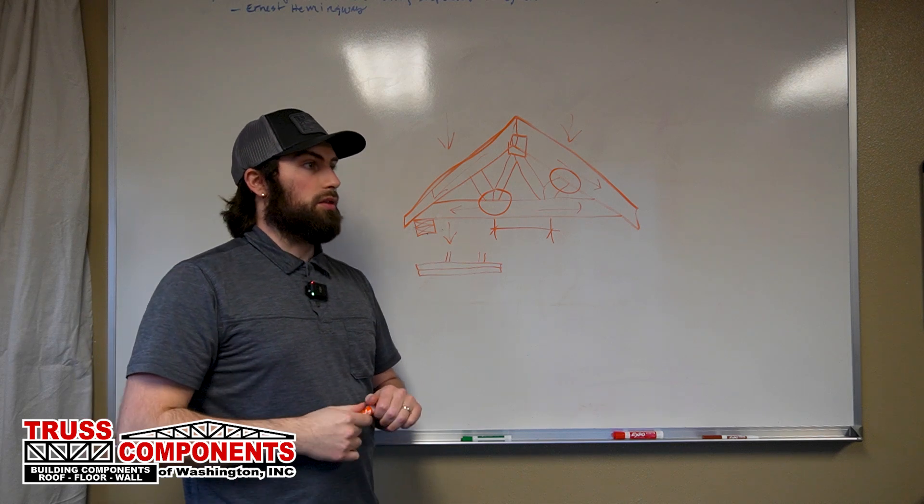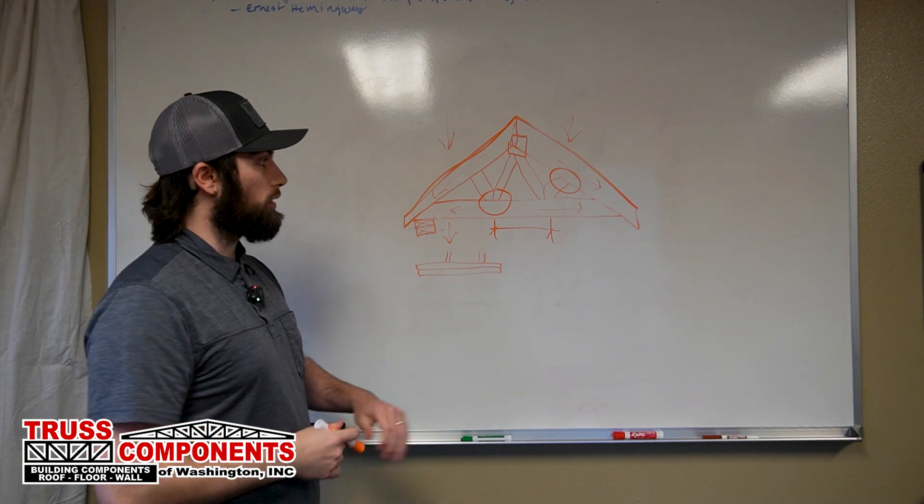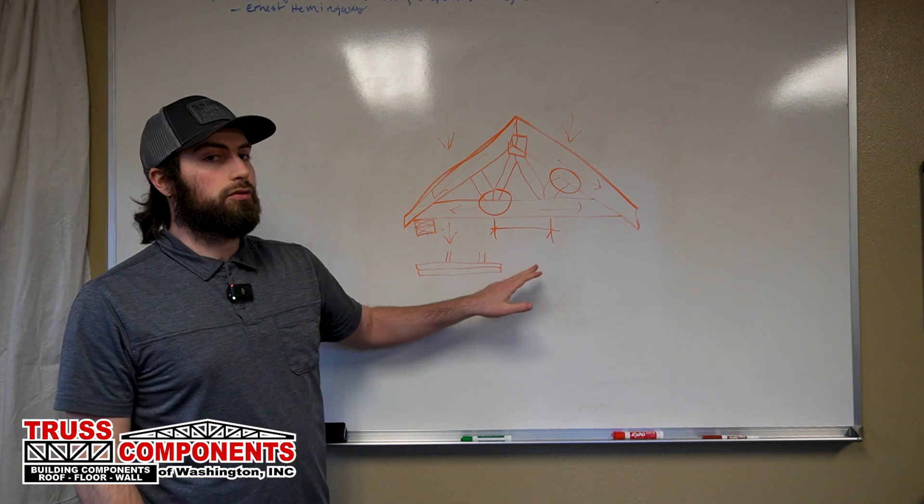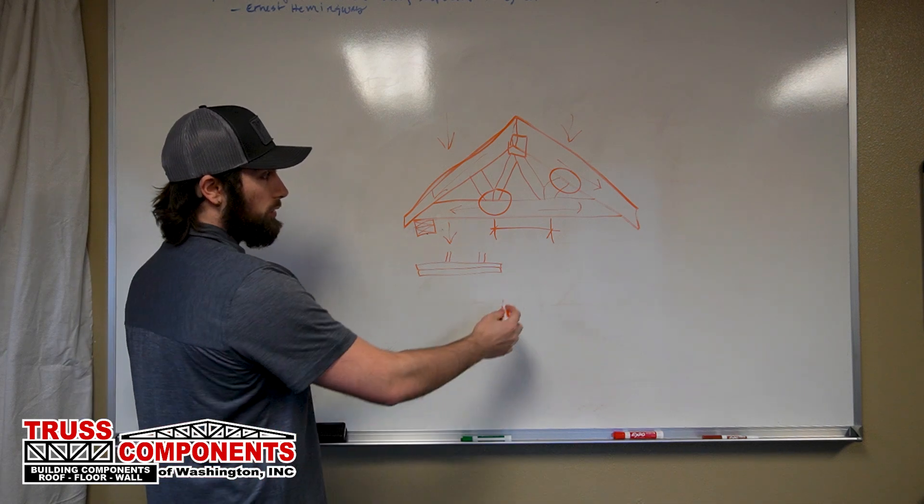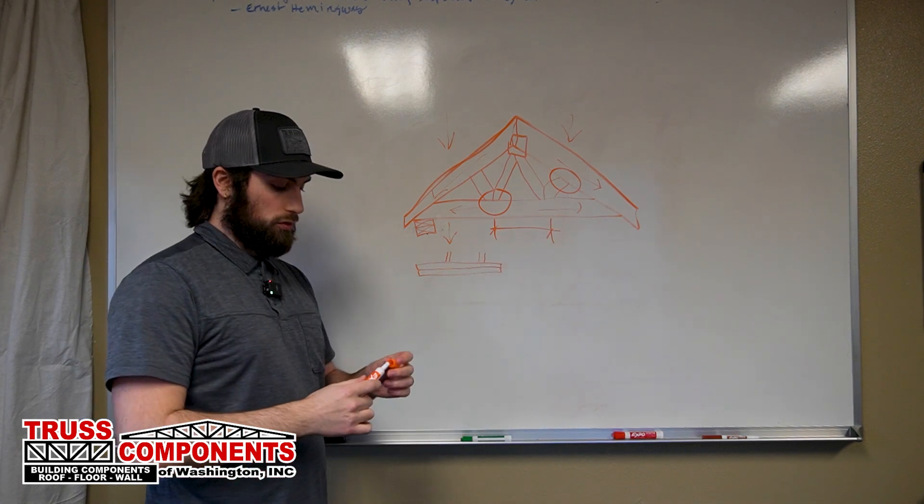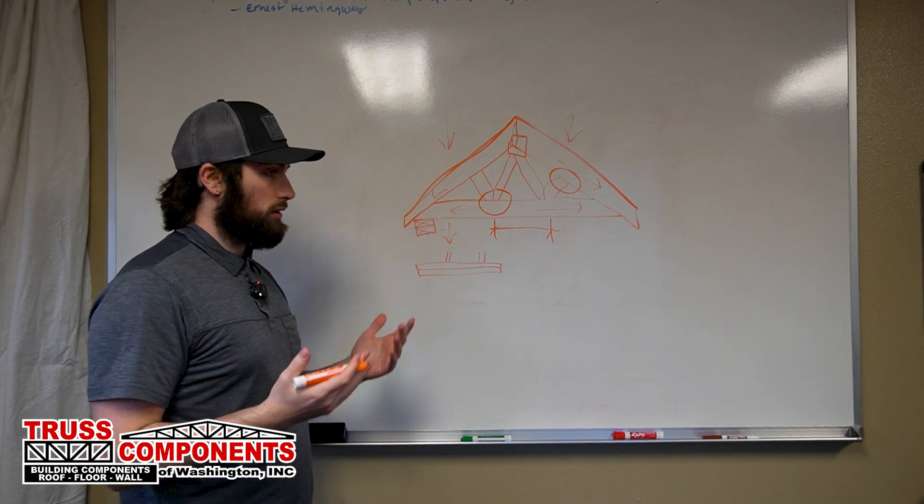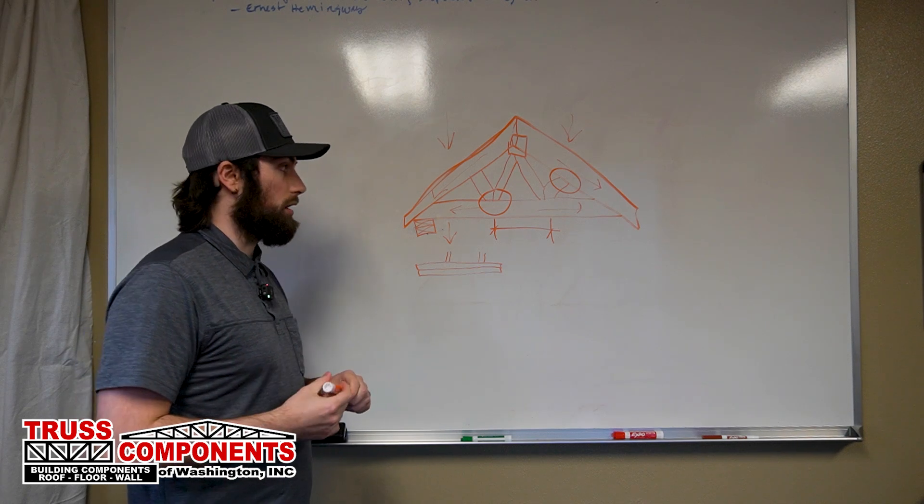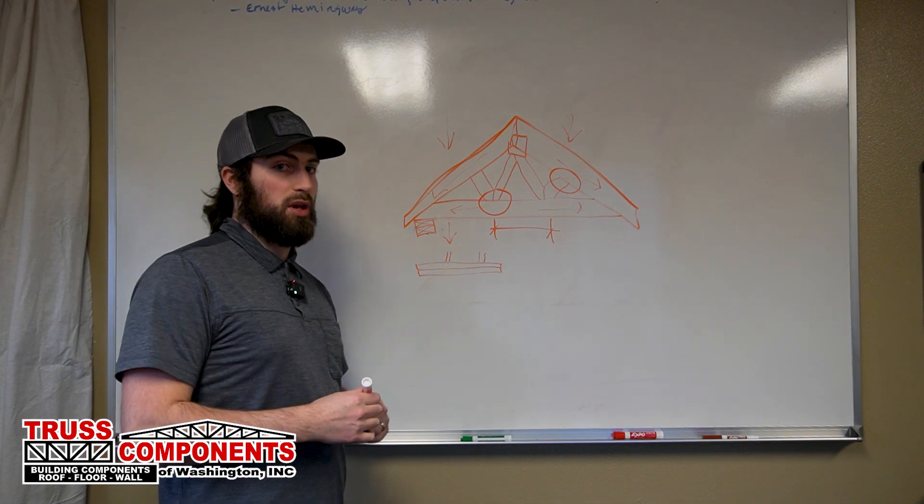So the number of joints in a truss and how long those panels are have a large influence on how well a truss performs. The longer a panel is, the more likely it is to deflect or bend or sag when a load is introduced, and the closer together the joints are, the stiffer that panel is.